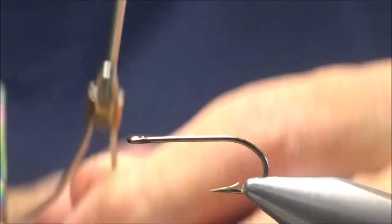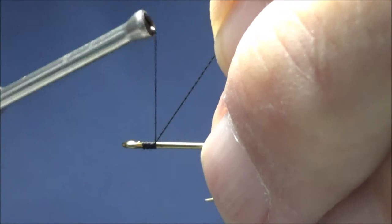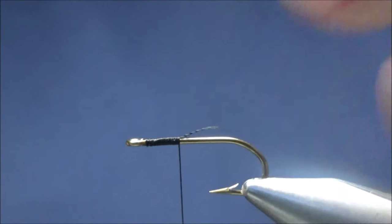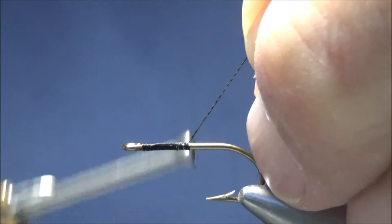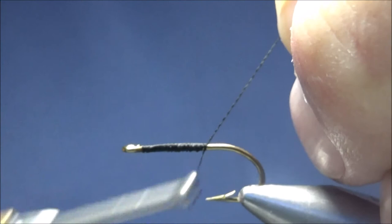I'm going to start the thread behind the eye using what's called an angle wrap. I'm going to lay the thread on the tag end at an angle, then pull that thread down onto the shank with the wrap right in front of it. I want to make sure that I get the entire shank covered and don't want any of it showing through.